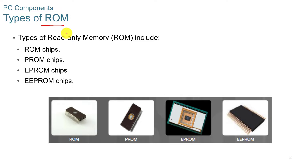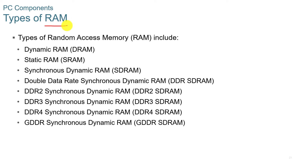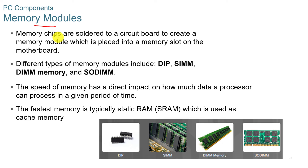Types of ROM include ROM, PROM, EPROM, and EEPROM chips — these are pre-programmed chips put onto the device with information that needs to be read. Different types of RAM include dynamic RAM or DRAM, static RAM or SRAM, synchronous dynamic RAM or SDRAM, double data rate synchronous dynamic RAM or DDR, and then DDR2, DDR3, DDR4, and GDDR. Memory chips are soldered to a circuit board to create a memory module placed into a memory slot on the motherboard.